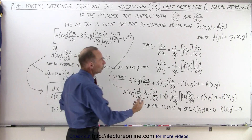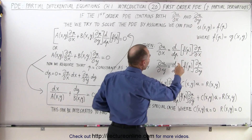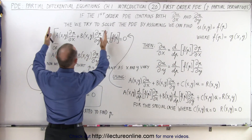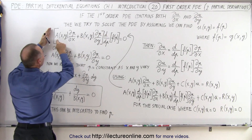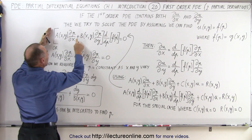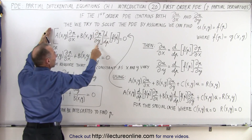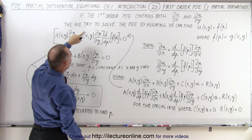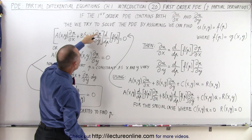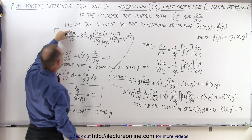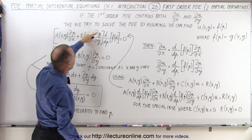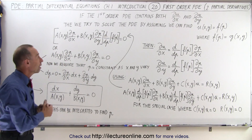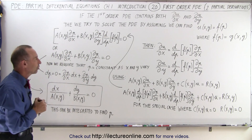Now we're going to factor out the derivative with respect to P of F(P), and then we end up with what's in the brackets: A times the partial of P with respect to X plus B times the partial of P with respect to Y. So instead of having the partial of U with respect to X and the partial of U with respect to Y, we have the partial of P with respect to X and the partial of P with respect to Y, and then we have the derivative with respect to P of F(P) equal to zero.